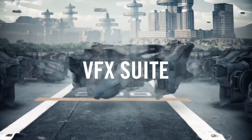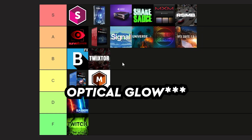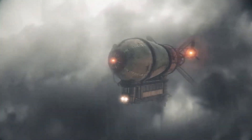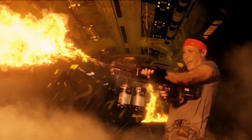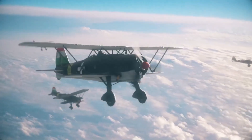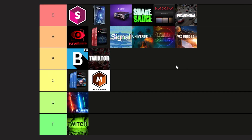Moving on we have VFX Switch - this is a great plugin which deserves a bit higher space. Let's rank it at A for now, just because it has a better version of Deep Glow and it also comes with the Bank plugin which allows you to add muzzle flashes in 3D space, and also Chromatic Displacement which is really great.